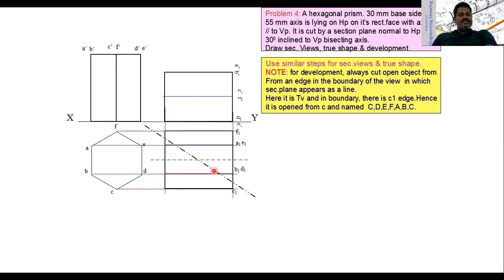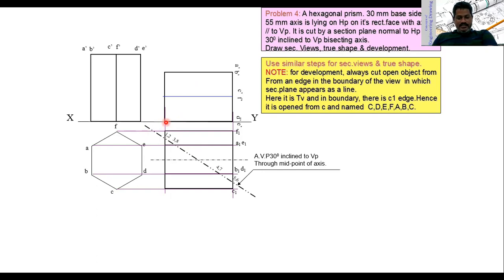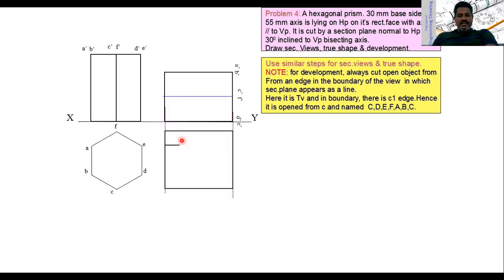The hexagonal prism is sectioned by a plane inclined at 30 degrees to VP. Draw a line below the XY line at an angle of 30 degrees to represent this section. Name all intersection points 1 through 8 at the locations where the section plane intersects the edges.